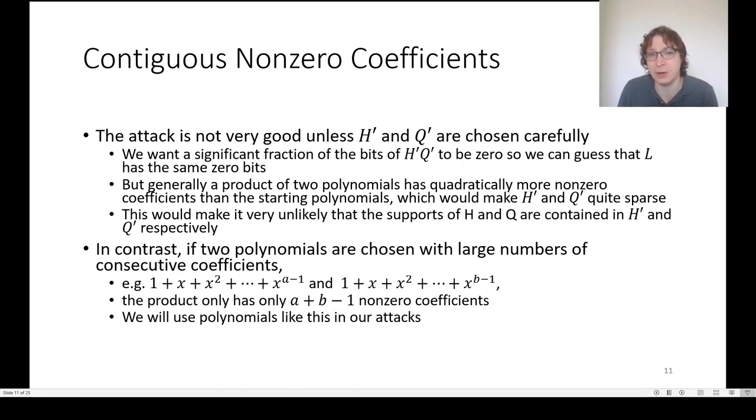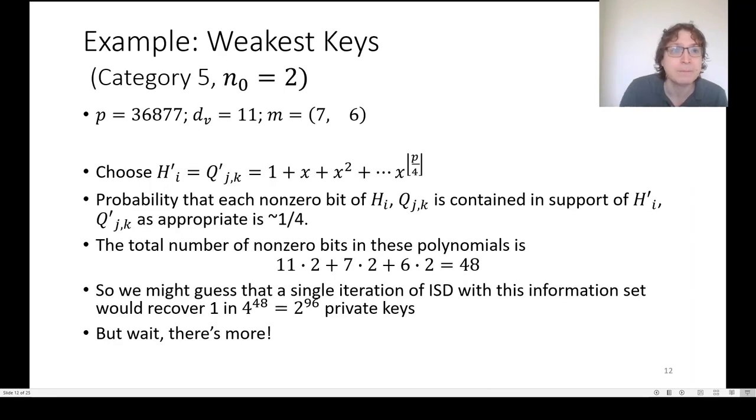Unfortunately, this attack is not very good for concrete parameters unless H prime and Q prime are chosen carefully. We need some significant fraction of the bits of L prime to be 0, so that we can use that as an information set. But generally, when we take two polynomials, the weights of the polynomials multiply. And so, we would need H prime and Q prime to be very sparse, which makes the probability they will contain the support of H and Q pretty low. In contrast, if we choose the coefficients, the nonzero coefficients of these polynomials to be consecutive, then the weights only add in the product. And so, we can use much less sparse H prime and Q prime and have a much higher probability of guessing the support of H and Q with it.